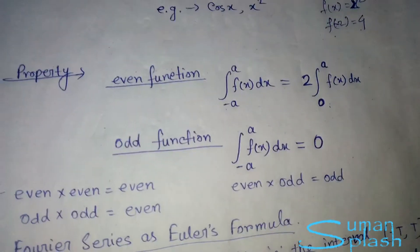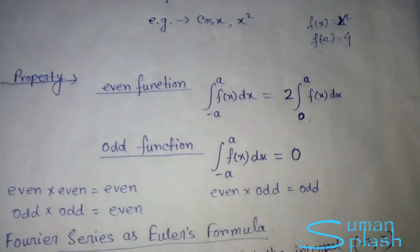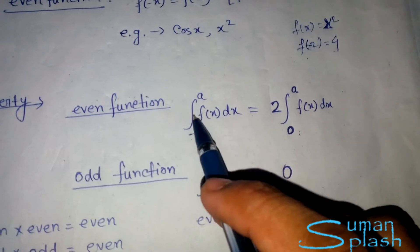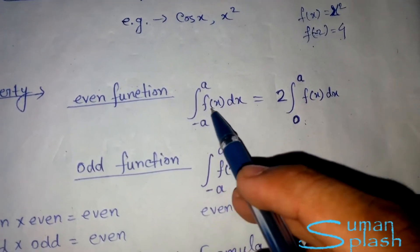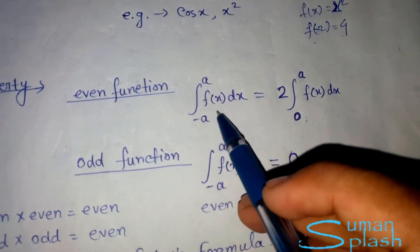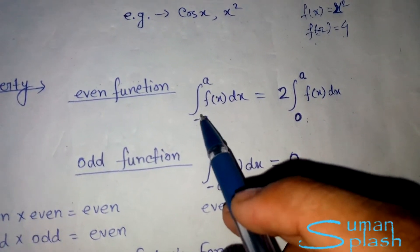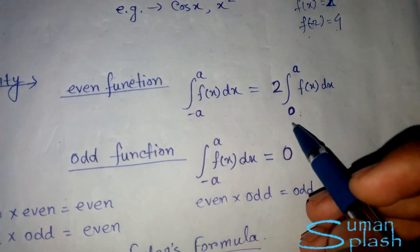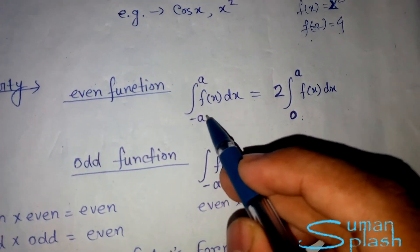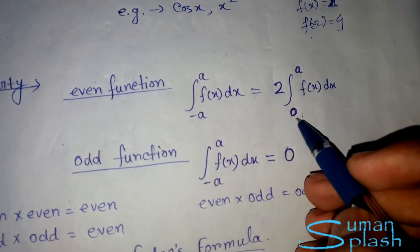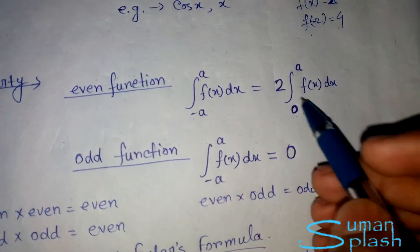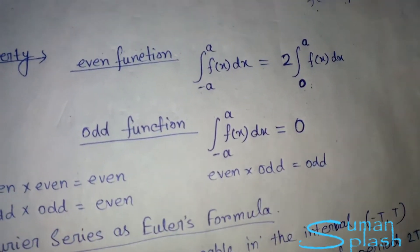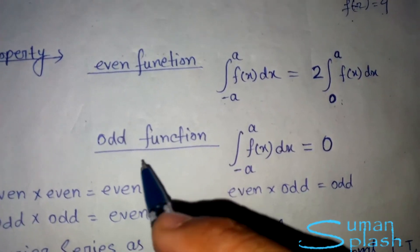Even and odd functions have properties needed to solve Fourier series problems. If f(x) is an even function, its integral from −a to a can be written as 2 times the integral from 0 to a of f(x) dx. The lower limit −a becomes 0, and a factor of 2 appears in front. This formula must be remembered.